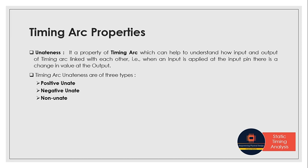Timing arcs have one unique property known as unateness. Unateness represents how the output is affected by whatever transition is happening on the input. In simple terms, each timing arc has a timing sense — describing how the output changes for different types of input transitions. This is important for timing as it specifies how the output will respond and how much time it will take.